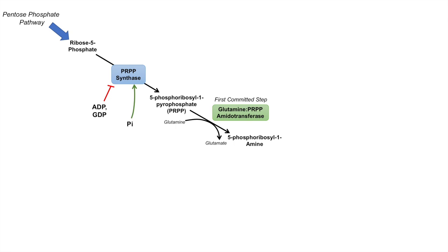Glutamine PRPP amidotransferase is the most important enzyme to remember for purine synthesis because it is the first committed step. This enzyme is actually inhibited by AMP, GMP, and IMP — some of the products of the purine synthesis pathway.